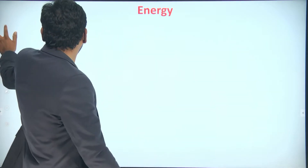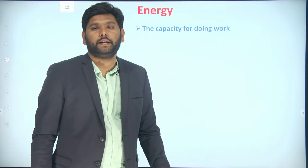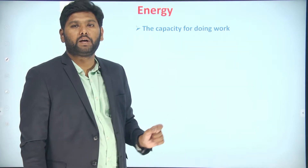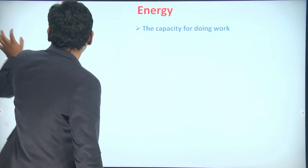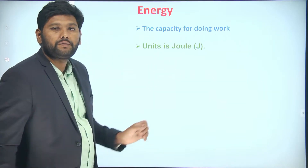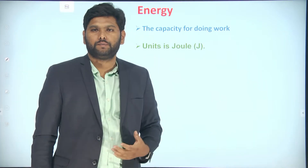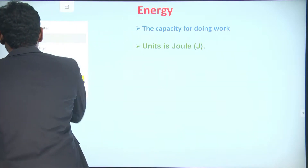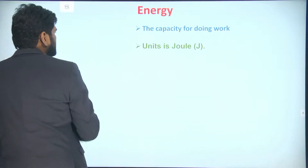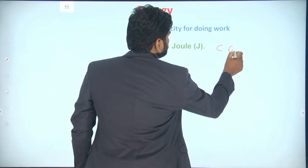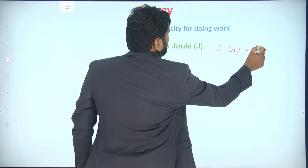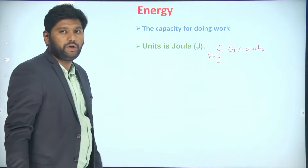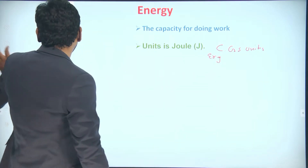What is energy? Energy means the capacity to do work. The SI unit for energy is joules. We also have CGS units — the CGS unit for energy is erg. ERG is the CGS unit and joule is the SI unit.